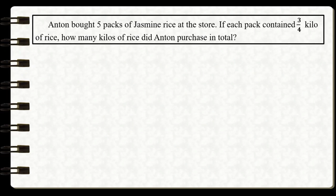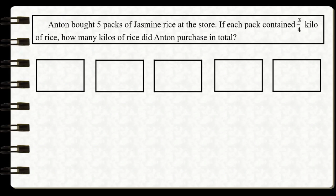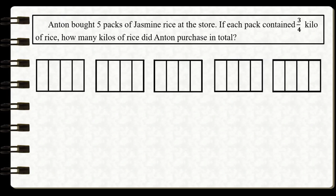Now let's try to answer this problem. Anton bought five packs of jasmine rice at the store. If each pack contained three-fourths kilo of rice, how many kilos of rice did Anton purchase in total? To answer this problem we can use rectangles or bars. We draw five rectangles representing the five packs Anton bought. Since each pack contains three-fourths, we divide each pack into four equal parts and shade three parts of every pack.